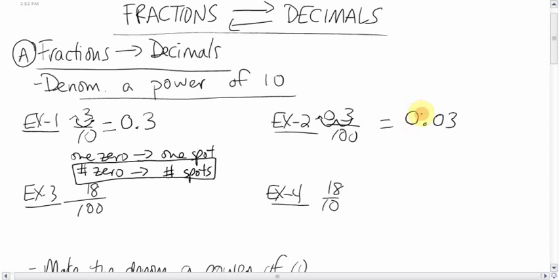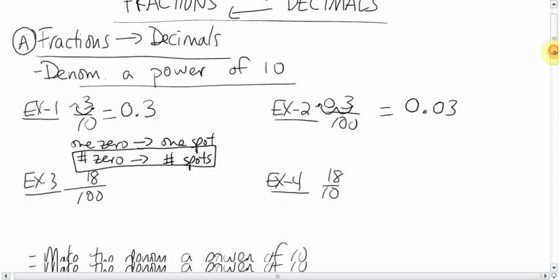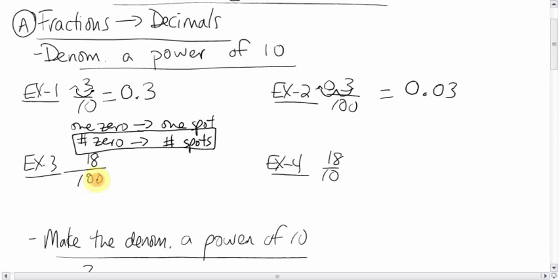On to this. 18 over 100. Same deal. Two spots. There are two zeros, so we'll move it two spots. It becomes 0.18. Here we got one zero, so we'll move it one spot. The decimal is here. We'll move it one spot over. We'll get 1.8. Simple. So if you have a question where it's converting fractions to decimals and it's already a ten or a hundred or even a thousand or whatever, easy. Those are the easy ones.